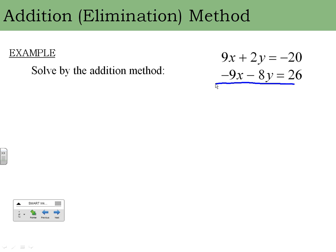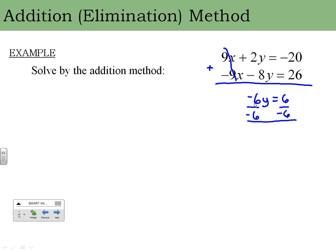We're starting with the simplest type of problem. If I add these two equations together, 9x plus negative 9x gives me 0x — those cancel out because they're the same number with opposite signs. Then 2y plus negative 8y gives me negative 6y, and negative 20 plus 26 gives me 6. Now I solve for y by dividing both sides by negative 6, which gives me y equals negative 1.